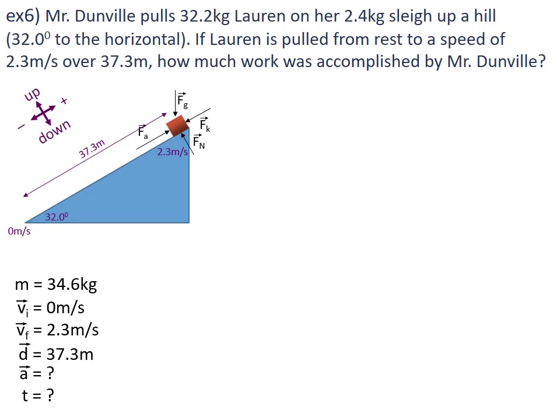There are three different works being done: friction, because it's being slid up the hill; gravity, because the box is now higher than it was at the beginning; and acceleration, because the box went from 0 to 2.3 metres per second. The first thing we're going to solve for is the work that went into accelerating the box: work_acceleration equals F-net times d.